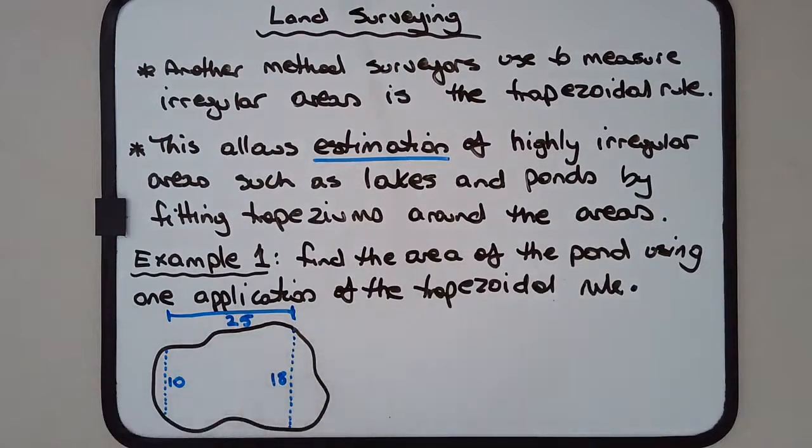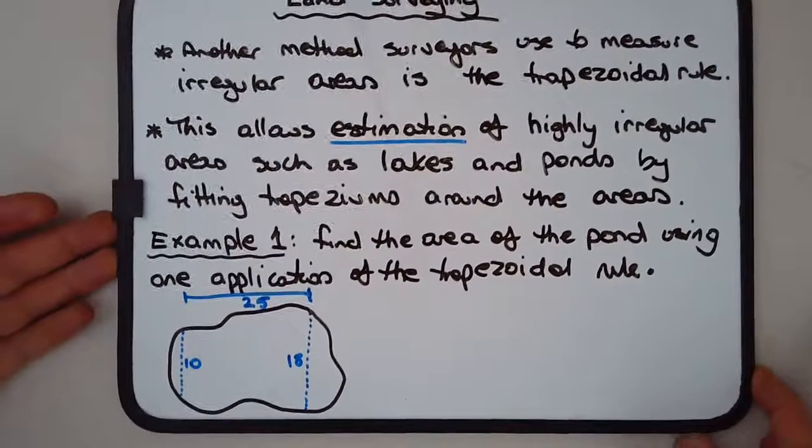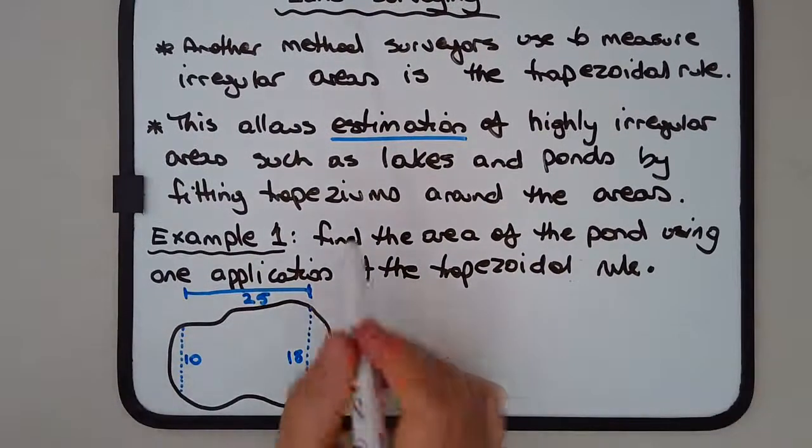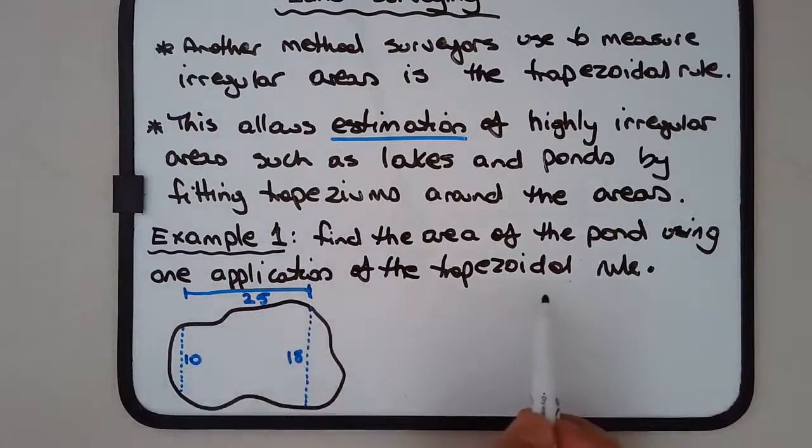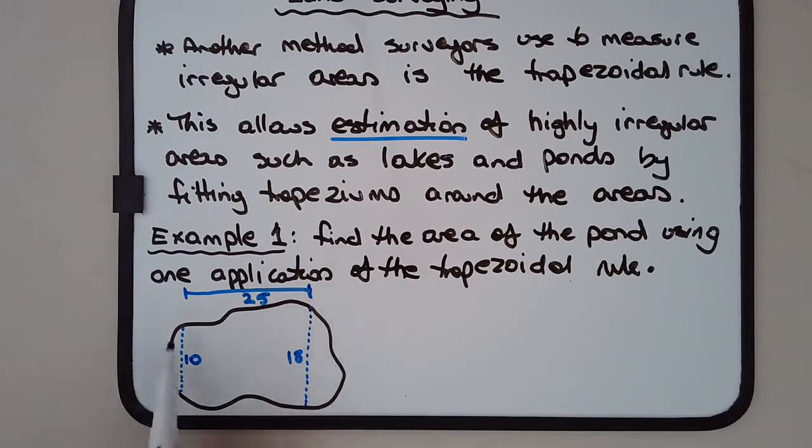Let's demonstrate this first with an example. Example number one: find the area of the pond using one application of the trapezoidal rule. So what the rule states is can we somehow fit a trapezium to this based on the measurements given. We have one measurement here which is in meters, so 10 meters.